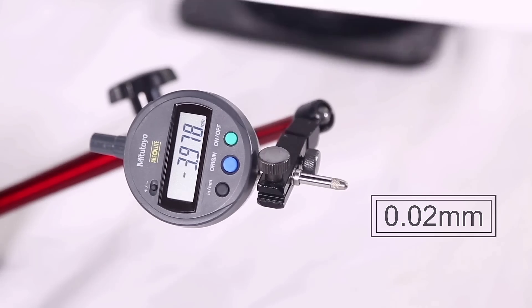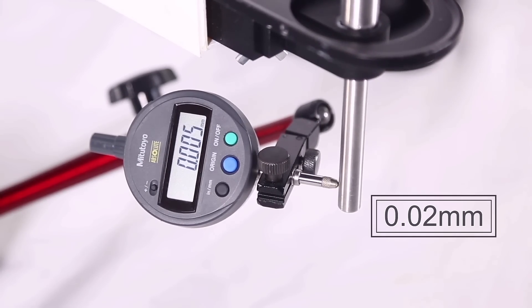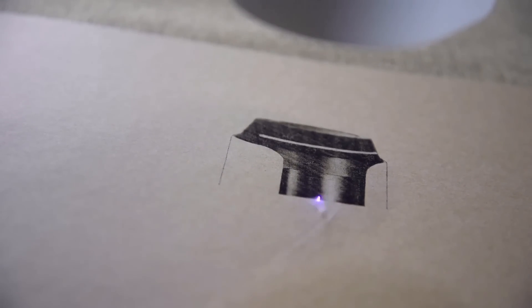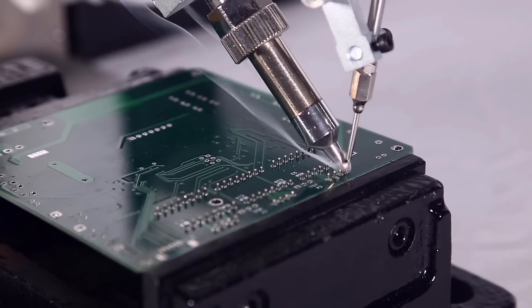Dobot M1 has 0.02 mm repeatability and 1.5 kg payload. With these standardized, easy to change heads, you can easily turn this power into productivity.